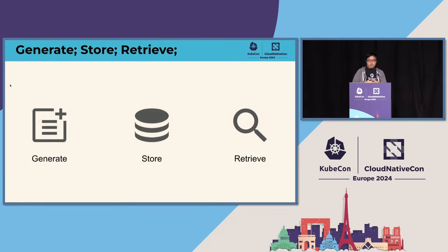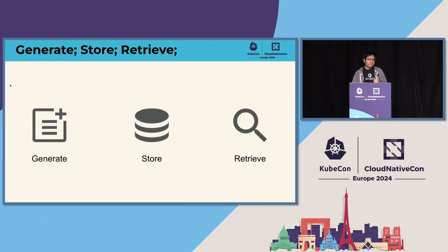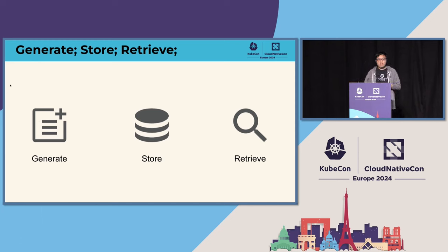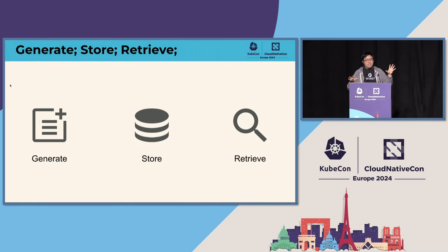Technically — nuts and bolts — what's included in fulfilling the EO from an engineering perspective is: one, generation of SBOMs; two, storing the SBOMs; and finally, whenever a request comes in from a compliance officer or federal agency, we want to be able to retrieve the SBOMs they want. Let's break this down into three parts and start with generation.